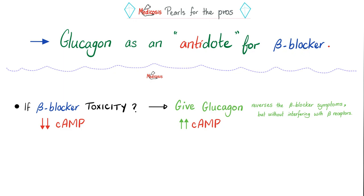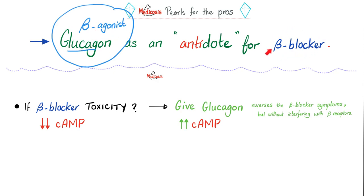Glucagon is the antidote for beta blocker toxicity. Glucagon is similar to beta agonists — they are sisters. Therefore, glucagon and beta antagonists are enemies, which is why glucagon is the antidote for beta antagonists. Glucagon boosts cyclic AMP; beta agonists also boost cyclic AMP. Beta blockers do the opposite — they decrease cyclic AMP. So the antidote should be a medication that increases cyclic AMP. If you're taking a drug that's anti-sympathetic, give a medication that is pro-sympathetic.